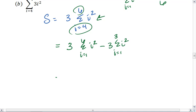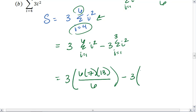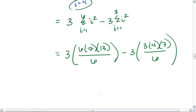All right, now let's look at this. So I get 3 times 6 times 7 times 13 all over 6 minus 3 times 3 times 4 times 7 all over 6. Because these are your n, your n plus 1, 2n plus 1, all over 6. And again, n, n plus 1, 2n plus 1, all over 6.